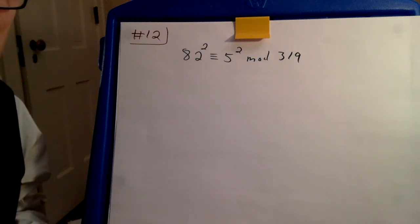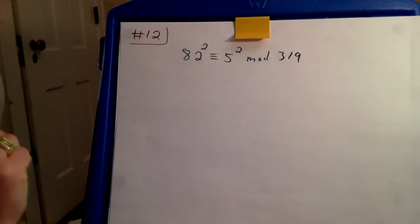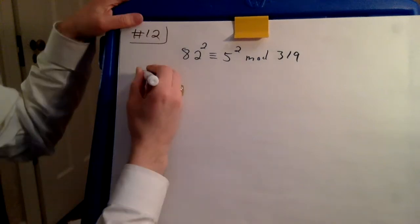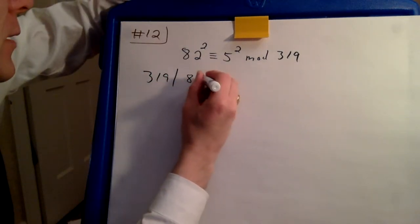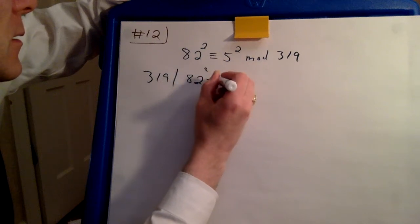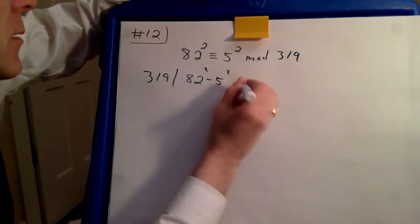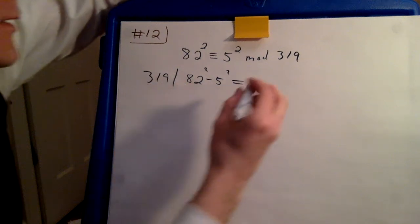Use this fact to factor 319. Well, what it says is that we're going to need to divide the difference of 82 squared and 5 squared. Now we know we can factor the difference of two squares.